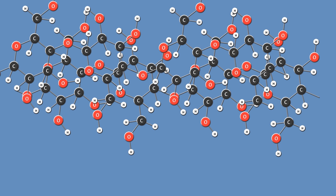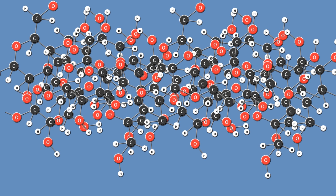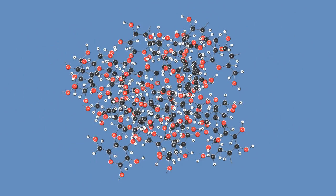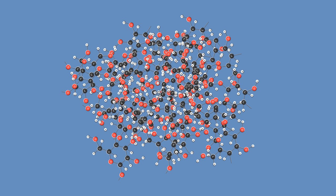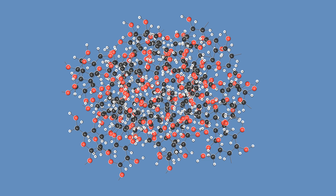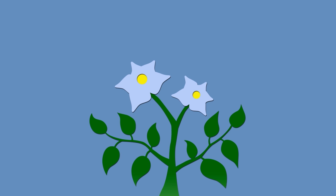Now layer all these polymers that you have formed — it is an even stronger structure. Now add more and intertwine them. This is the main component of plant cell walls, which is why the stem of your potato plant can stay upright.